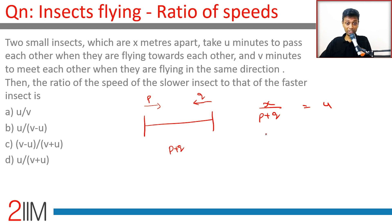v minutes to meet each other when they are flying in the same direction. Relative distance by relative speed is x by p minus q, we are assuming p is greater than q. Ratio of the speed of the slower one to the faster one, we want to find q by p.